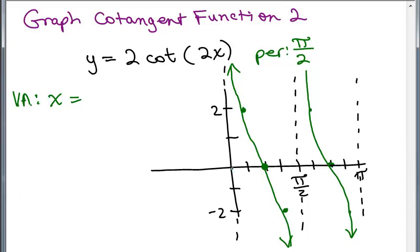Where does it go through? Well, the first one is just 0. That's easy. And then we're going to add on the period to get the next one. So it's just pi over 2. The cool thing is for the cotangent, it's whatever the period is times k. So it's pi over 2 times k, or pi k over 2.